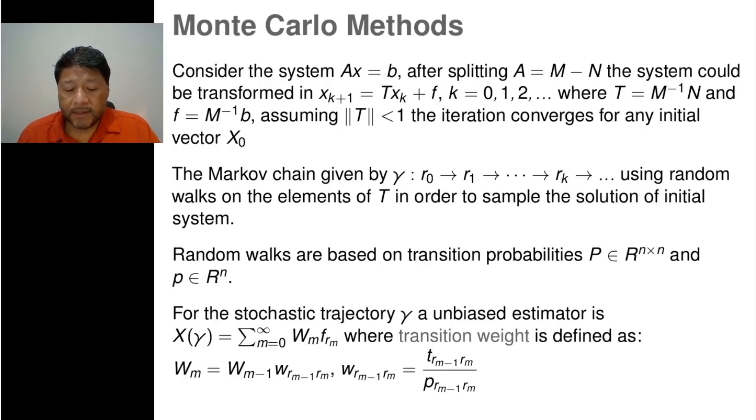On the other hand, one sequence of a state with probability P of transition, let us obtain an unbiased estimator X based on the transition weights. It is worth to note the ratio of elements of T over elements of the matrix P.